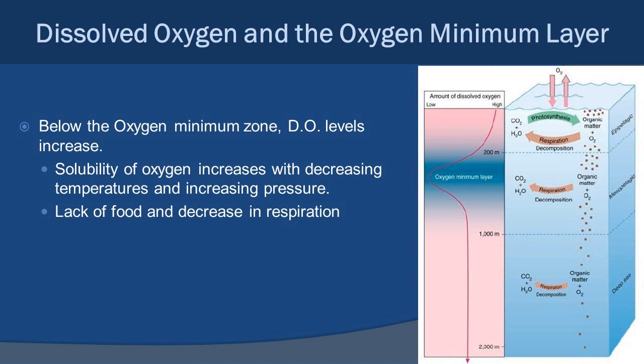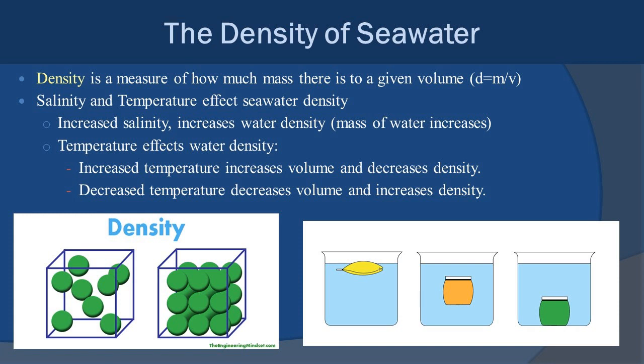Below the oxygen minimum zone, dissolved oxygen levels actually start to increase. The solubility of oxygen increases with decreasing temperatures and increasing pressure. Also, the deeper you go, the density and diversity of marine life tends to decrease — there's no sunlight so food is scarce, meaning less respiration is occurring, which conserves the amount of oxygen present.